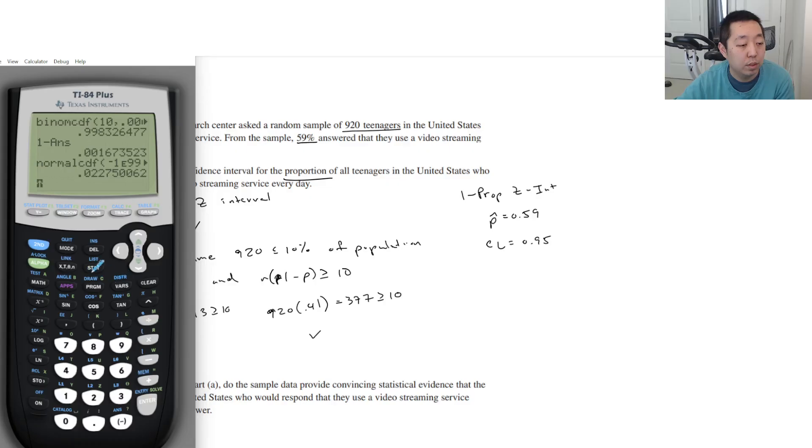And let's see what else the calculator is going to require us to do here. So we're going to do stat tests, one prop Z test, not Z, it's a one, one prop Z int. Okay. Oh, yeah.